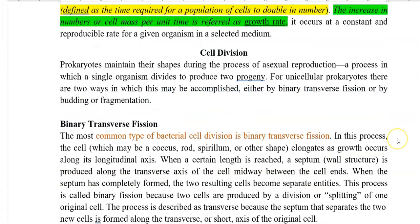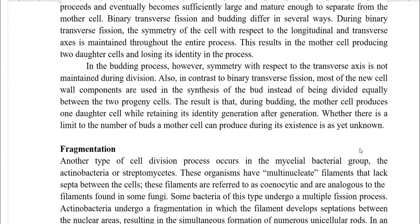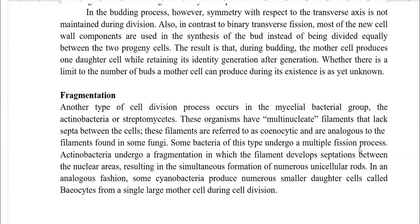Now we look at the different types of cell division. Prokaryotes maintain their shapes during asexual reproduction — there is no sexual reproduction in prokaryotic organisms. Among the various asexual reproduction types, binary transverse fission is an important form of cell division, followed by budding. Another important cell division is fragmentation, which commonly occurs in mycelial bacterial groups, mainly in actinobacteria or Streptomyces.